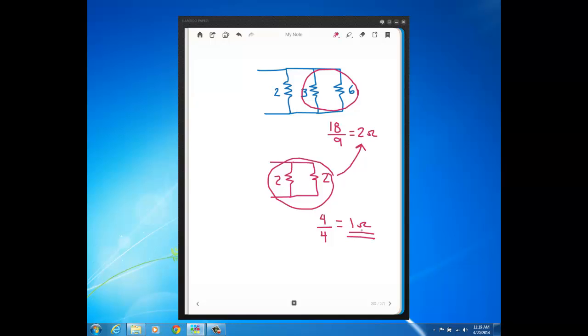So the reason why it's good to know that you can use this product over sum expression to get the parallel resistance of 2 resistors is because a lot of times, based on what the numbers are, the particular resistance values are, it's easier to do product over sum in your head than to deal with fractions.